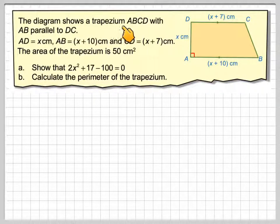The diagram shows a trapezium ABCD with AB parallel to DC. AD is X centimetres, AB is X plus 10, and CD is X plus 7. The area of this trapezium is 50 centimetres squared.